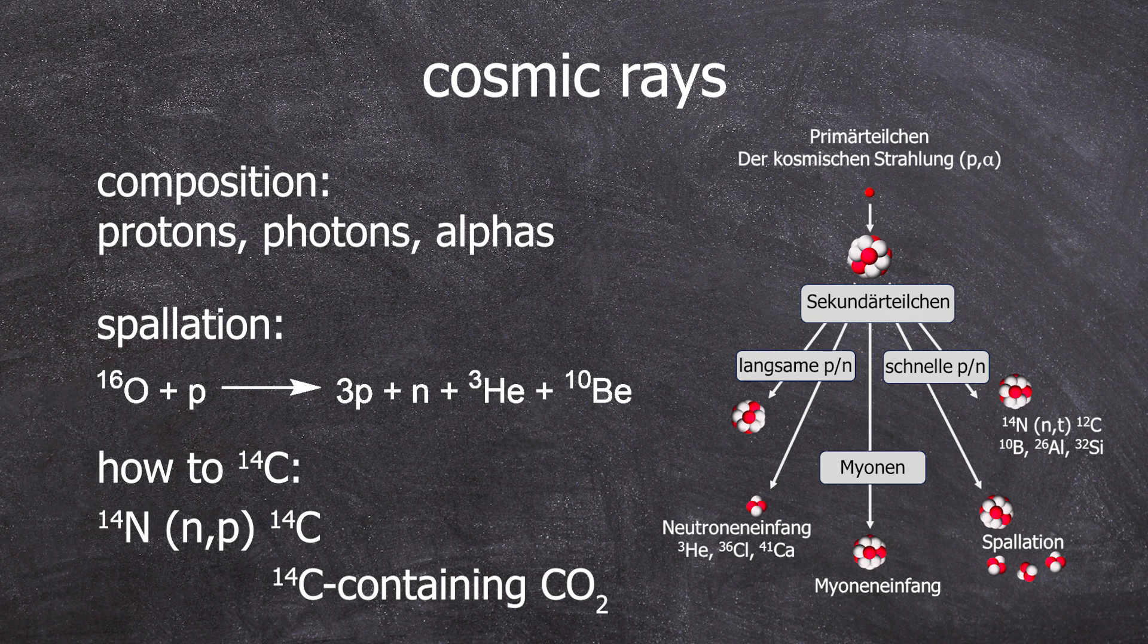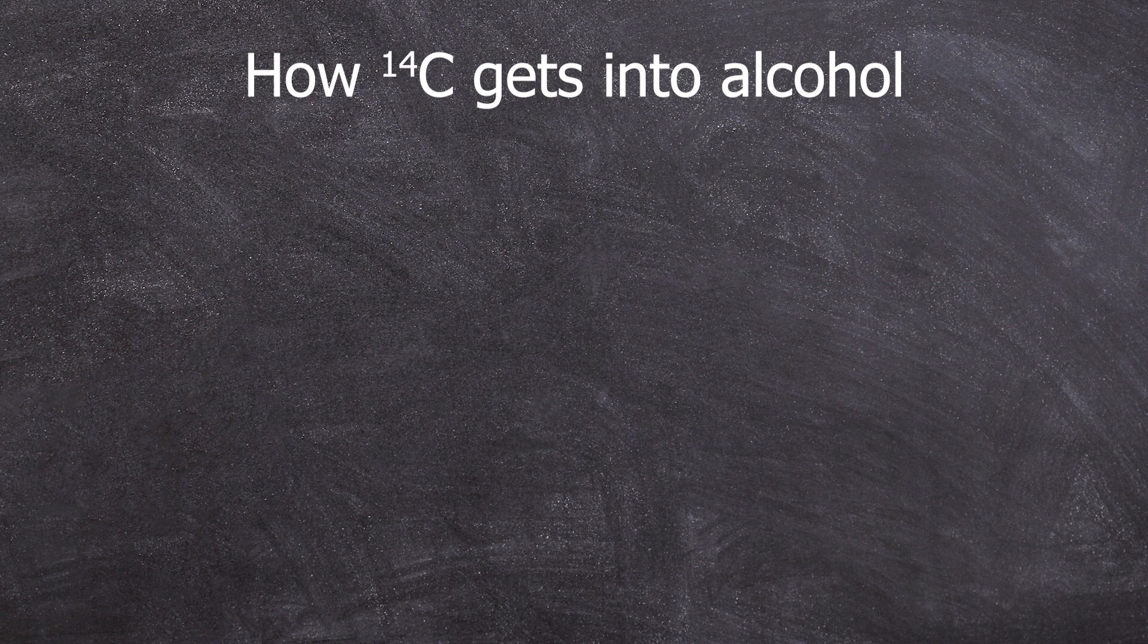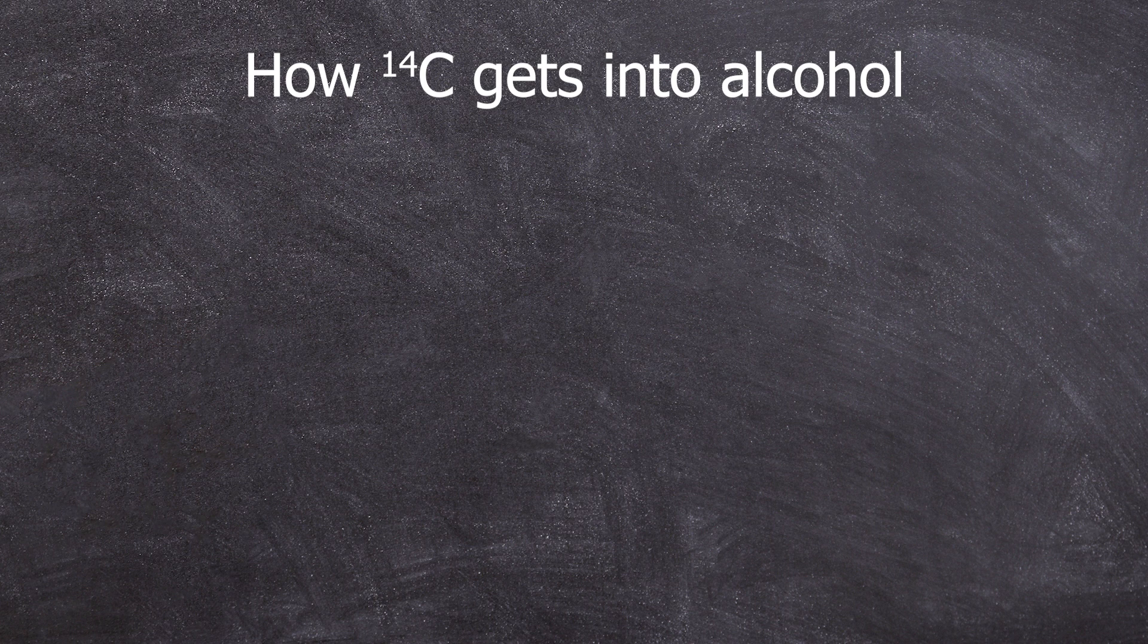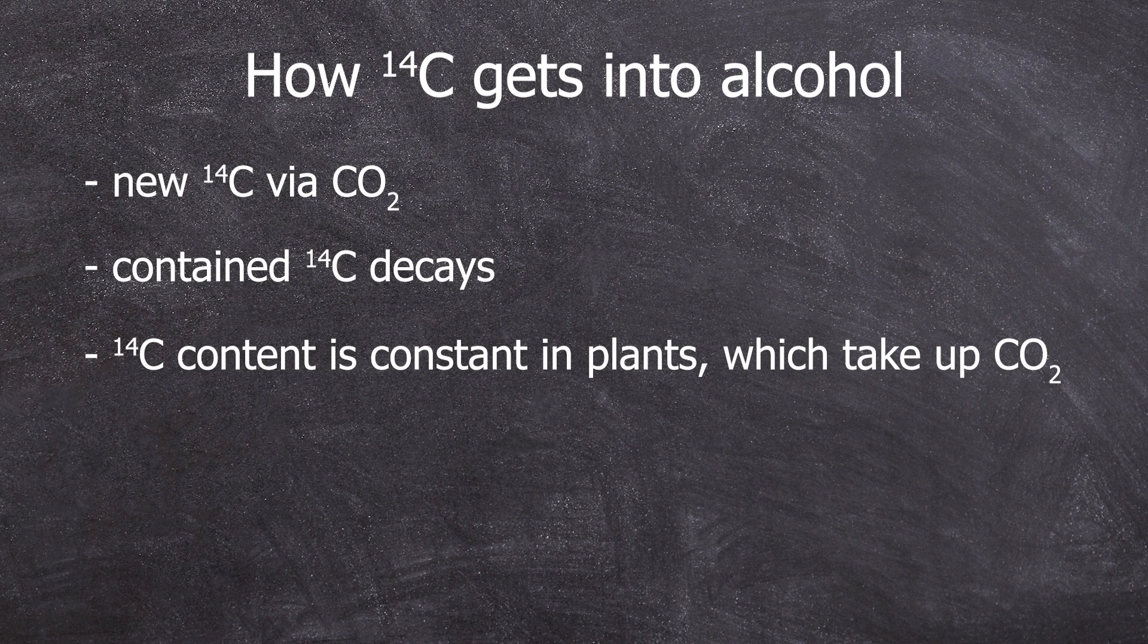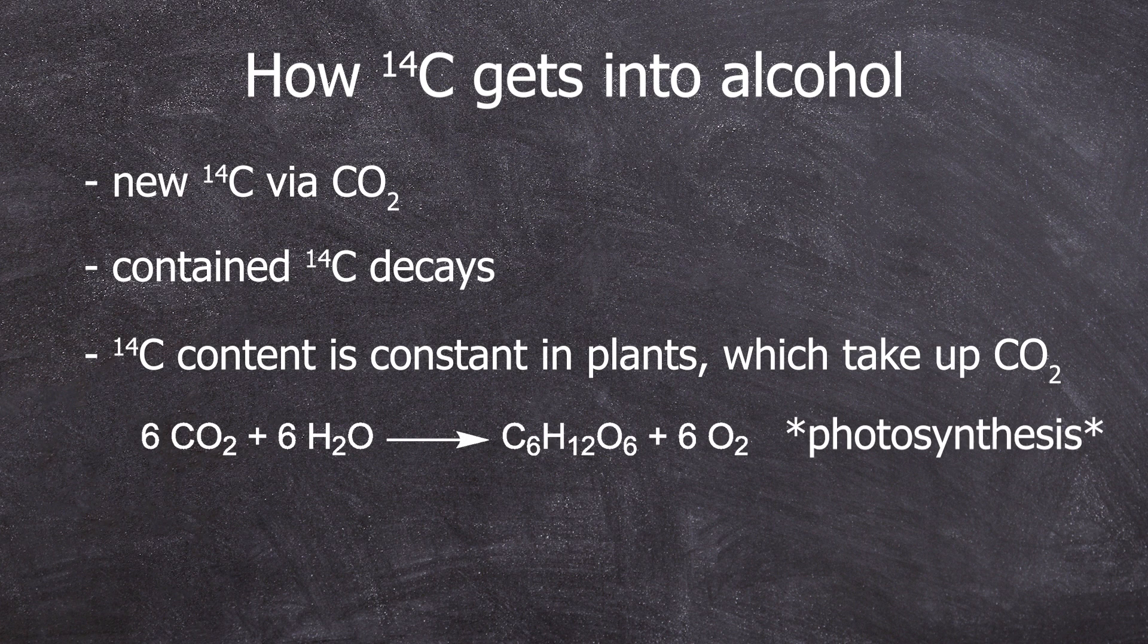This carbon-14 can then, for example, spread in the atmosphere as carbon-14 containing CO2. From now on, I will only refer to plants, although this applies to every living organism - but usually we do not obtain our alcohol from animals. The carbon-14 content in plants is kept constant through CO2. If the plant dies, carbon-14 can only decay and is not absorbed through photosynthesis in the form of new carbon-14 containing CO2.